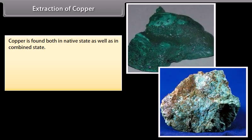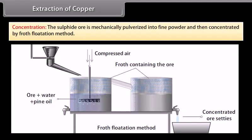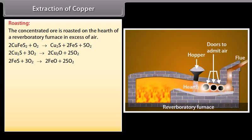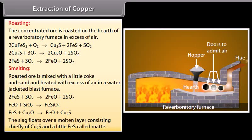Extraction of copper. Copper is found both in native state as well as in combined state. The main occurrence of copper as sulphides, oxides, and carbonates. The important steps involved in the extraction of copper are: Concentration - The sulphide ore is mechanically pulverized into fine powder and then concentrated by froth flotation method. Roasting - The concentrated ore is roasted on the hearth of a reverberatory furnace in excess of air. Smelting - Roasted ore is mixed with a little coke and sand and heated with excess of air in a water-jacketed blast furnace. Most of the remaining iron sulphide is converted into oxide which reacts with silica forming fusible slag of iron silicate. The slag floats over a molten layer consisting chiefly of Cu2S and a little FeS called matte.